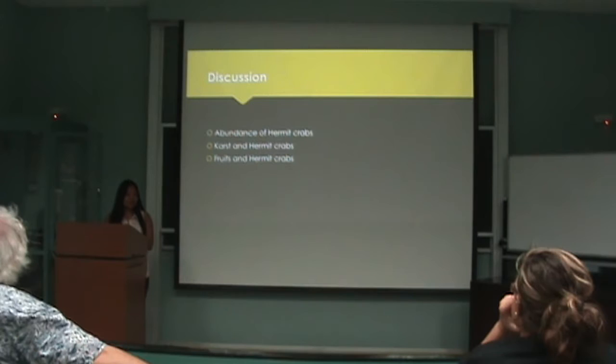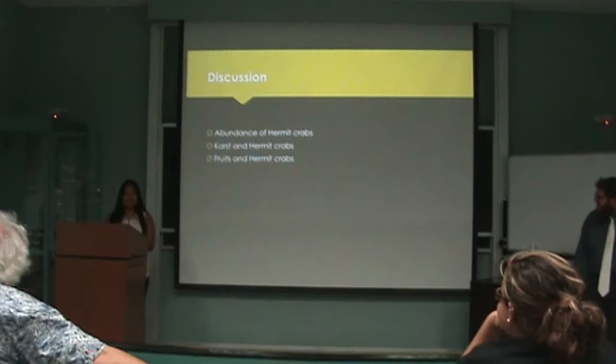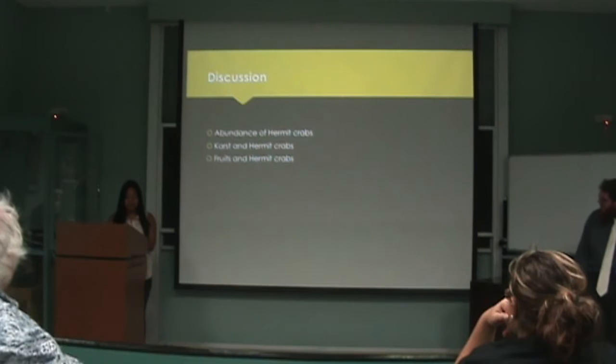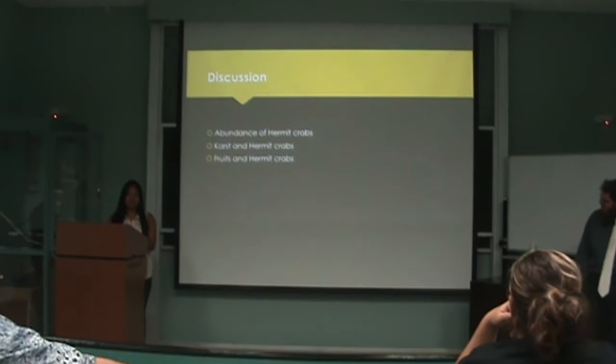Going back to our hypotheses: we thought there would be more hermit crabs in Guam due to a lack of bird predators, but our results disproved that — there were actually more on Saipan where they have more birds, so we ruled out bird predators. We thought that where there would be more karst there would be more hermit crabs, because that's the habitat they usually like, but there was no significant relationship between hermit crabs and visible karst, so we have to rule out visible karst as a factor. We also thought food availability would be a controlling factor, but there was no significant relationship between hermit crabs and fruits, so we have to rule that out as well.